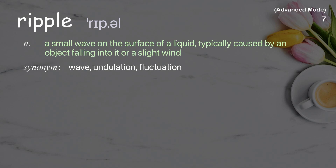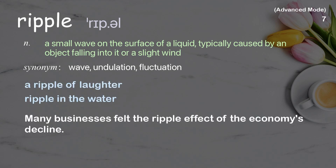Ripple. A small wave on the surface of a liquid, typically caused by an object falling into it or a slight wind. Examples: a ripple of laughter; ripple in the water. Many businesses felt the ripple effect of the economy's decline.